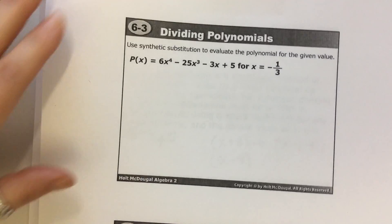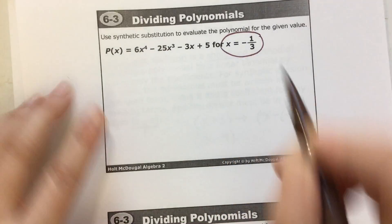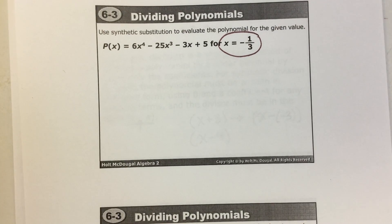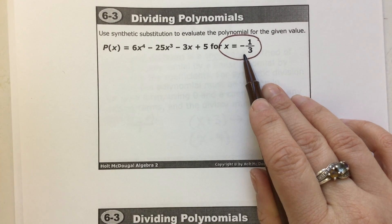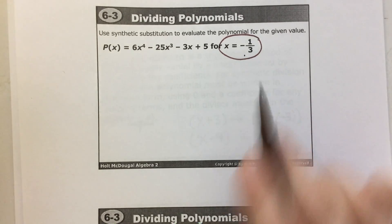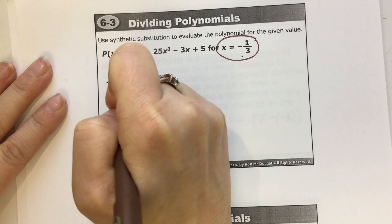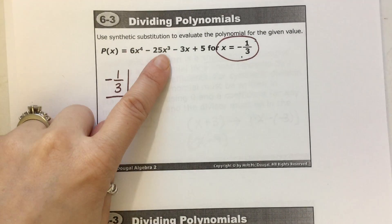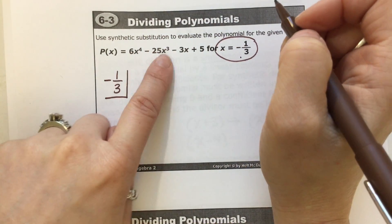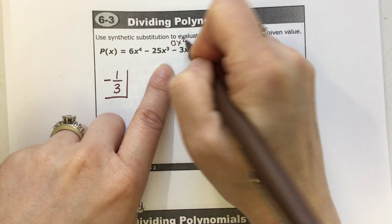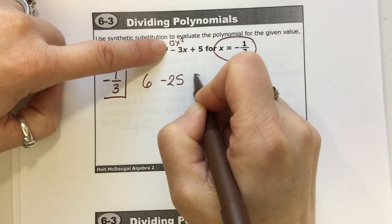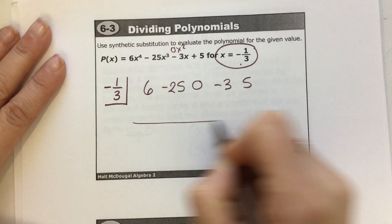Let's do a couple more. They want to know the value of 6x⁴ minus 25x³ minus 3x plus 5 when replacing x with negative 1 third. Put negative 1 third in the box. Notice we have 4x's, 3x's, 1x, and none — you can't go 4, 3, 1, 0 without a 2 in there. So the coefficients are 6, negative 25, 0, negative 3, and 5. Carry down the 6.